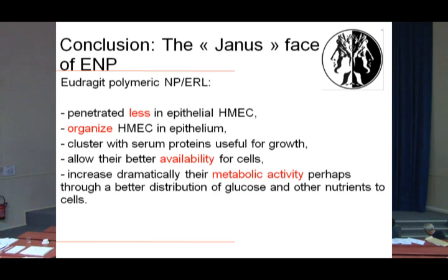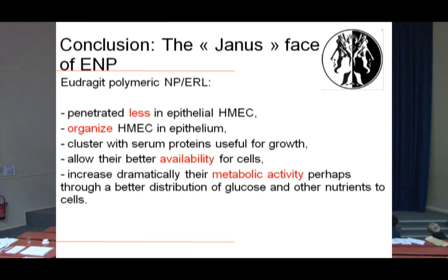In contrast, for other cell types or nanoparticle formulations, they penetrated less — for example in epithelial Hashmec cells. They organized and favored organization of Hashmec cells into an epithelium, clustered with serum proteins useful for growth, and allowed better availability of those proteins for cells. Finally, they increased metabolic activity, perhaps through better distribution of glucose or other nutrients.